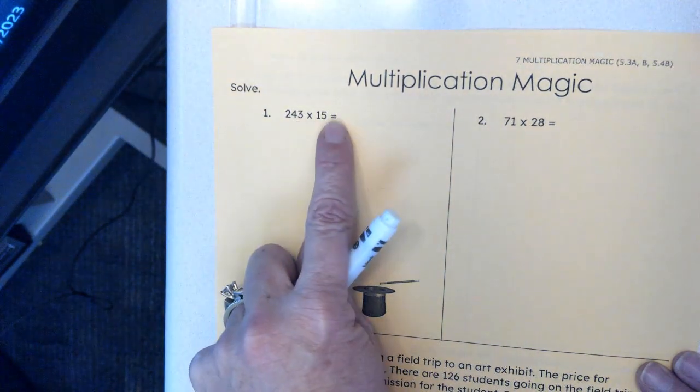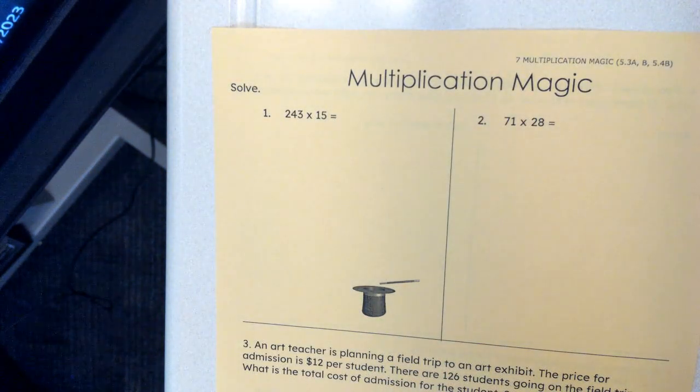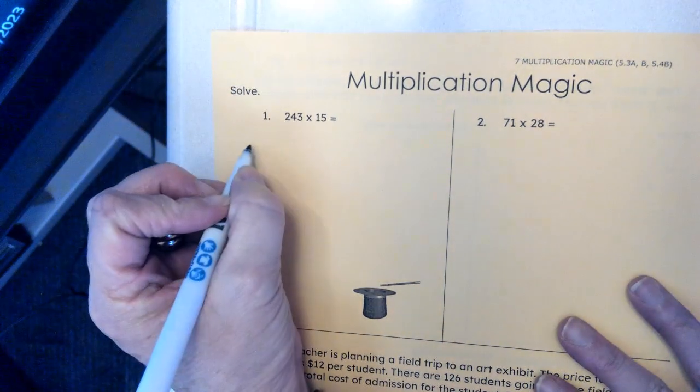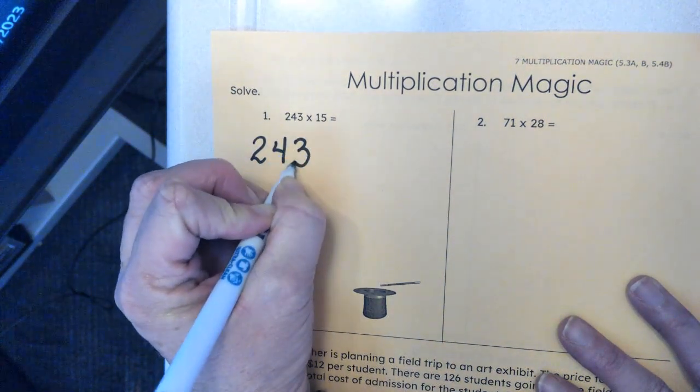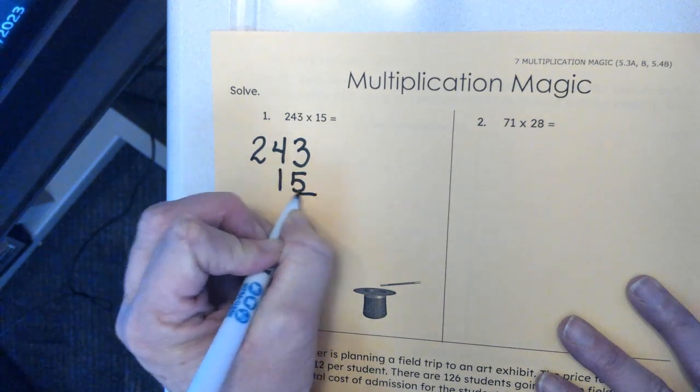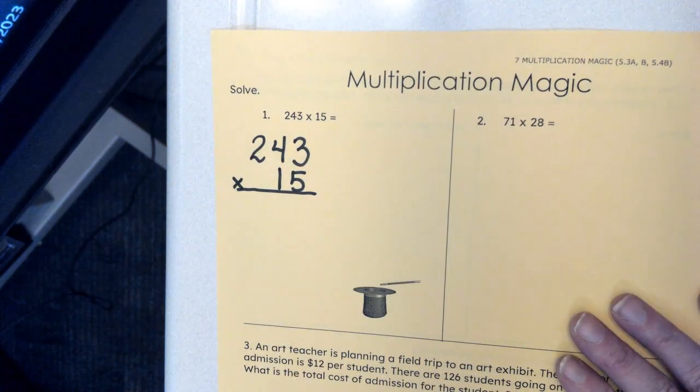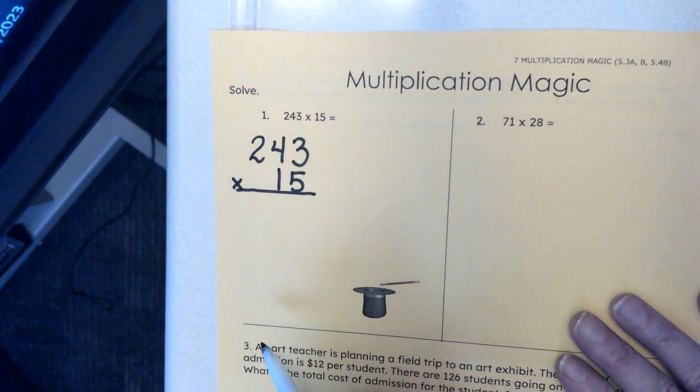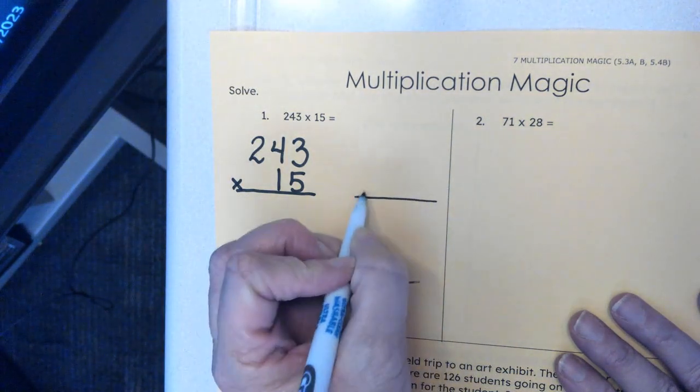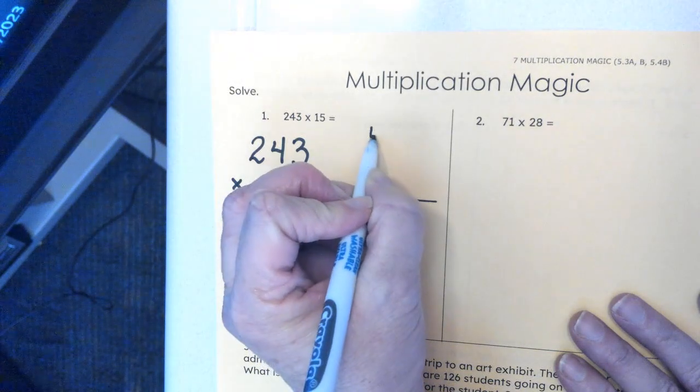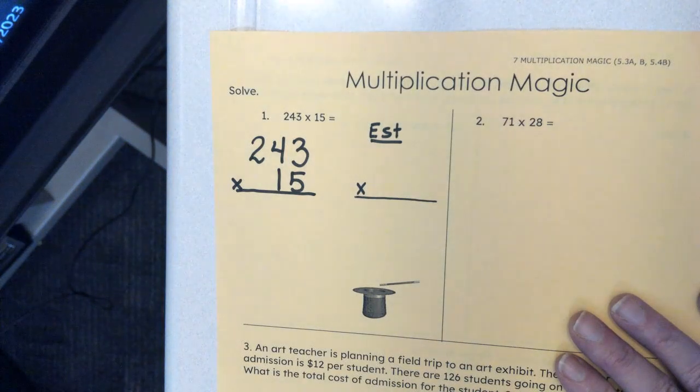We have a three-digit number by a two-digit number, and it's written horizontally, so the first thing that I want to do is set it up vertically: 243 times 15. Now it is not mentioned, but it is required that you do an estimate, so I want you to go ahead and make your easy estimate over here because that's going to be part of your answer.